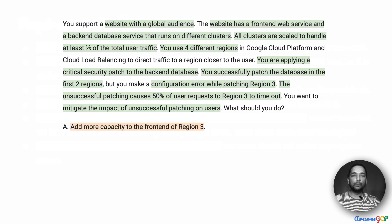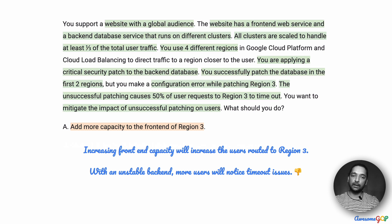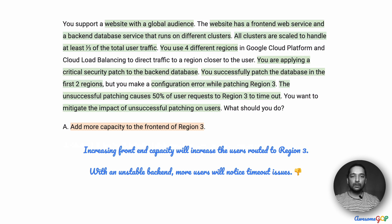Option A suggests adding more capacity to the frontend of region 3. If you increase the frontend capacity, it will mean that more users could come in — possibly even routed from other regions because it looks like there is more capacity there. But we have an unstable backend database in region 3. If more users come in, or even a regular number of users, they are still going to continue to notice timeout issues. So option A is not usable for us.